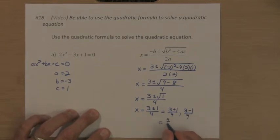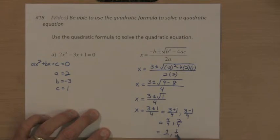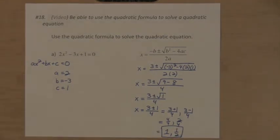3 plus 1 is 4 over 4, 3 minus 1 is 2 over 4. And that gives us an answer of 1 for the 4 over 4, and 2 over 4 simplifies to a half. So these are the two solutions for that quadratic equation, 1 and one half.